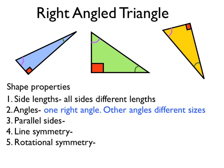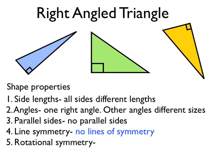The other two angles in the triangle are different to each other in a right angle triangle. So to sum up: in a right angle triangle, one of the angles is a right angle and the other two angles are different. There are no parallel sides, no lines of symmetry, and no rotational symmetry.